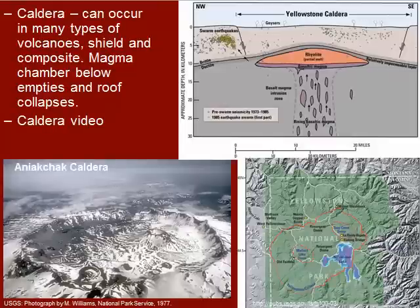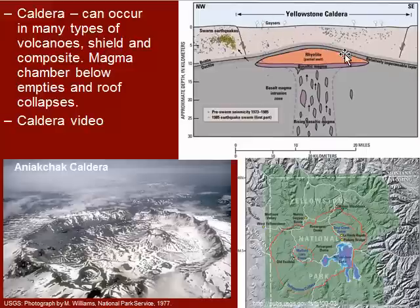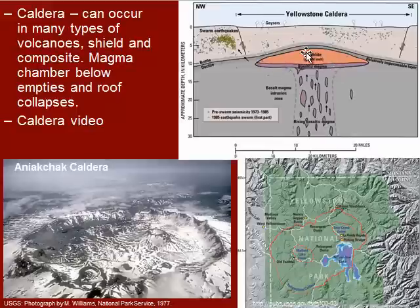Calderas can occur in many different types of volcanoes. We see them in shield volcanoes like Kilauea, in composite volcanoes such as Crater Lake in the Pacific Northwest, and at hotspots like the Yellowstone hotspot — here you can see basically almost the entire park is the caldera. What happens is this magma below the surface erupts out onto the surface, leaving a void space, and then the surface collapses down into that void space, producing this large circular-shaped basin.